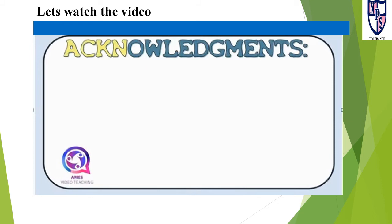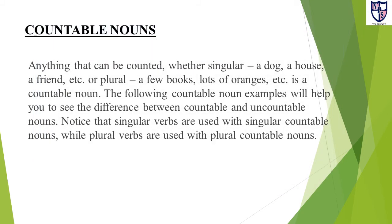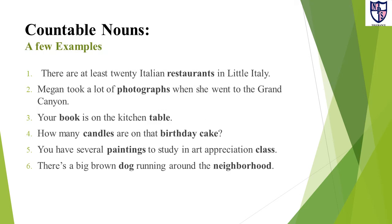So students, you have watched the video. Now let's move on towards the lesson. Countable nouns: anything that can be counted, whether singular like a dog, a house, a friend, or plural like a few books, a lot of oranges, is a countable noun. Notice that singular verbs are used with singular countable nouns while plural verbs are used with plural countable nouns.